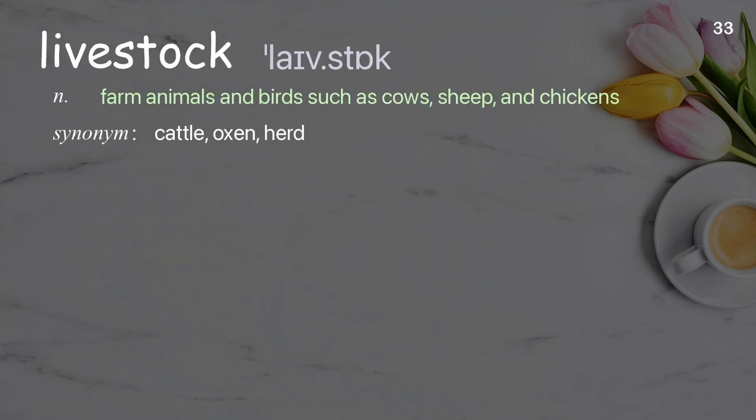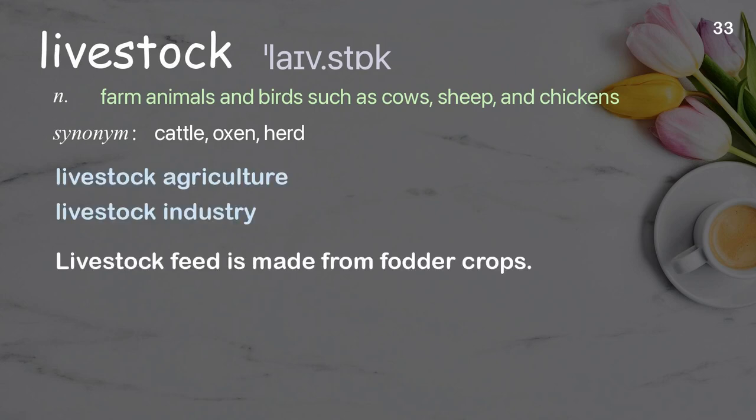Livestock: Farm animals and birds such as cows, sheep, and chickens. Examples: Livestock agriculture, livestock industry. Livestock feed is made from fodder crops.